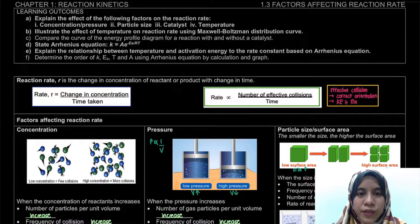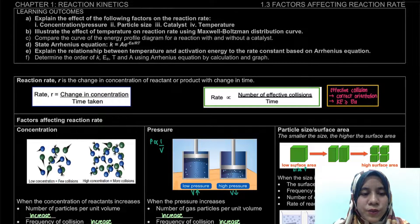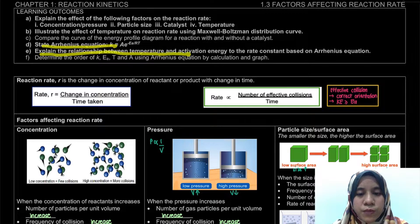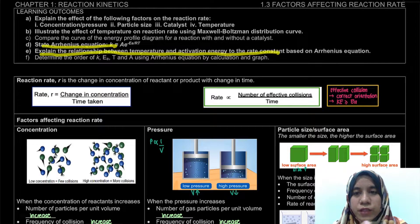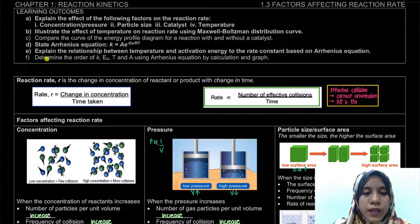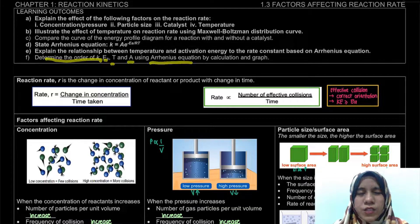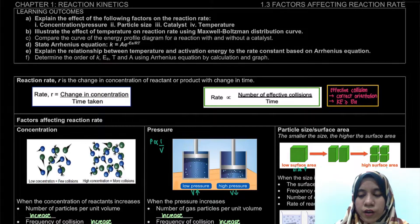Assalamualaikum and hello everyone. Welcome to video 1.3: Factors Affecting Reaction Rate. In this video, we're going to learn to state the Arrhenius equation and explain the relationship between temperature, activation energy, and the rate constant based on the Arrhenius equation. We will also determine the rate constant, activation energy, temperature, and Arrhenius constant using the Arrhenius equation by calculation and graphical methods.